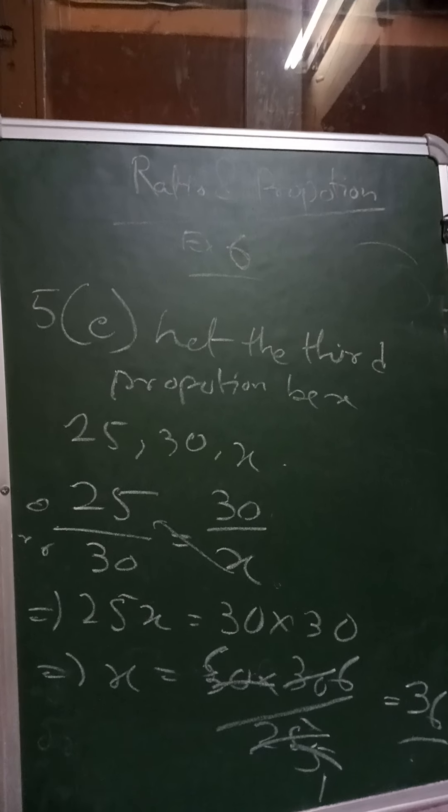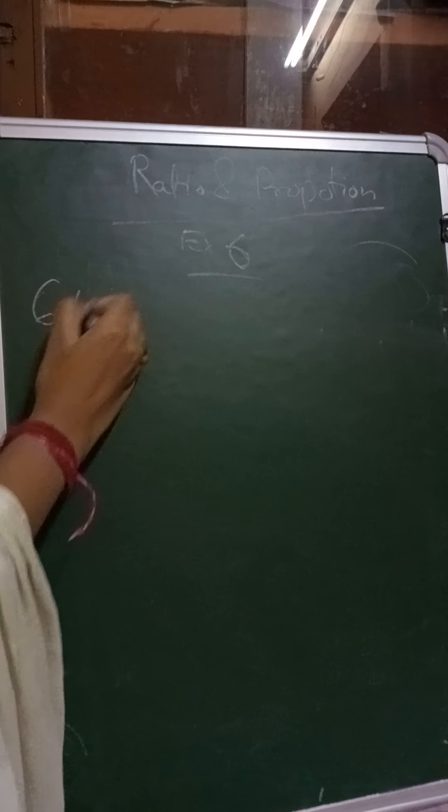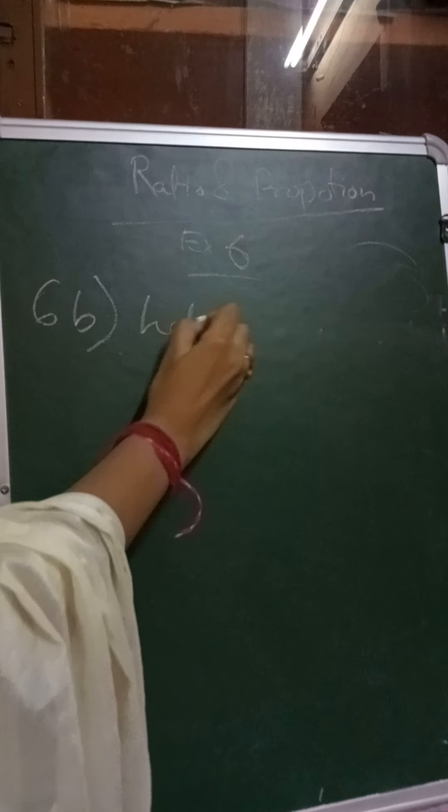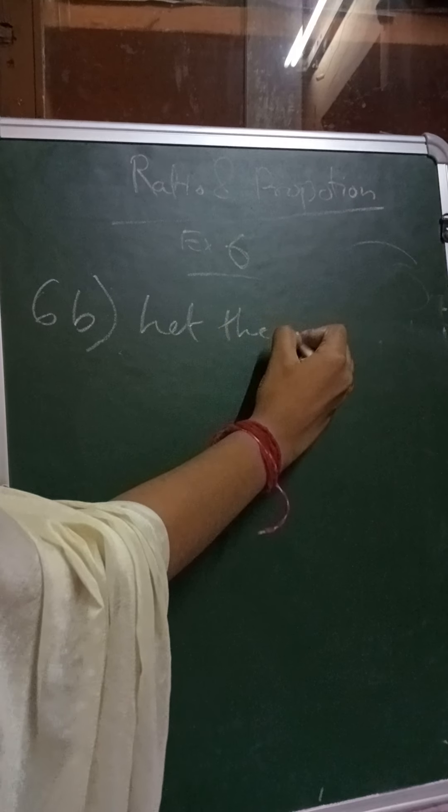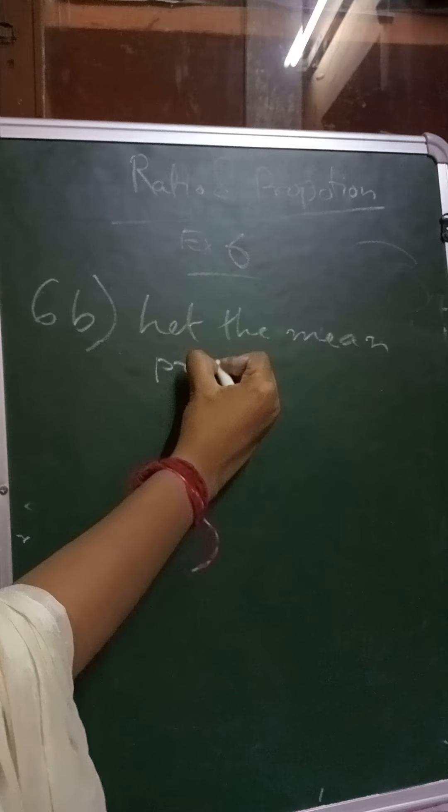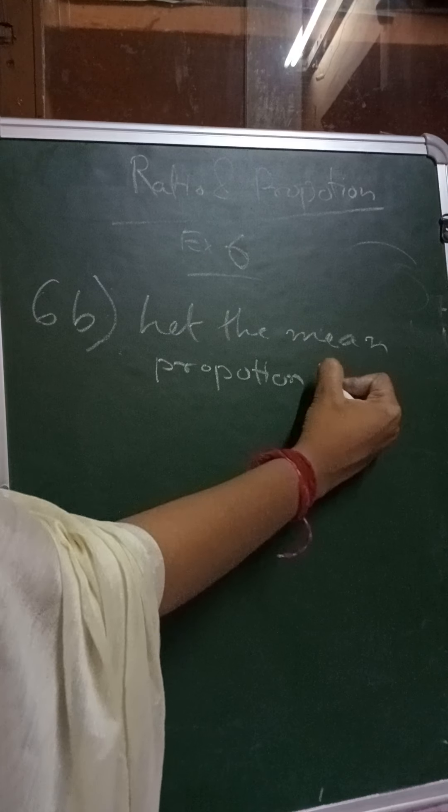Now we will do sum number 6B where we have been asked to find out the mean proportion. Now again, for the mean proportion, we will consider let the mean proportion be x.